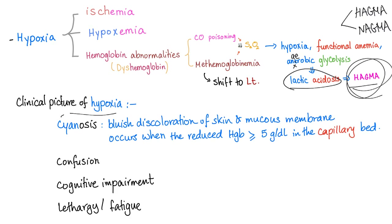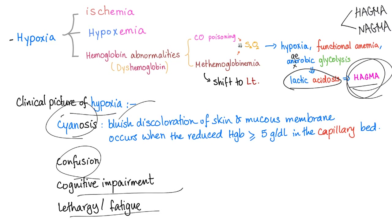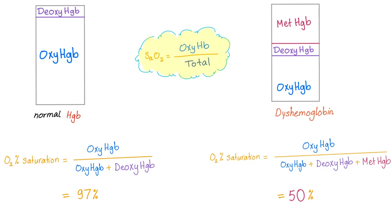Clinical pictures of hypoxia: cyanosis, confusion, cognitive impairment, lethargy, and fatigue. Normal hemoglobin and dyshemoglobin couldn't be more different. The saturation in normal hemoglobin is around 97%; in dyshemoglobin, such as methemoglobinemia, let's say 50% — a huge difference.